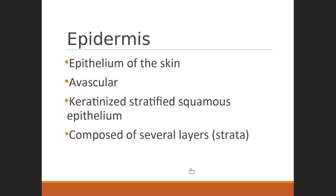Starting superficial and working deep, it's important to keep the functions of each layer distinct and separate. The epidermis is purely epithelial tissue — that covering and lining tissue found anywhere the internal body meets the external environment, including down the esophagus, stomach, GI tract, lungs, and the outside skin. This tissue is purely avascular — there are no blood vessels in the epidermal layers. A very shallow paper cut may just shave off skin without bleeding, meaning you didn't cut deep enough through the epidermis into the dermis where blood vessels are found.